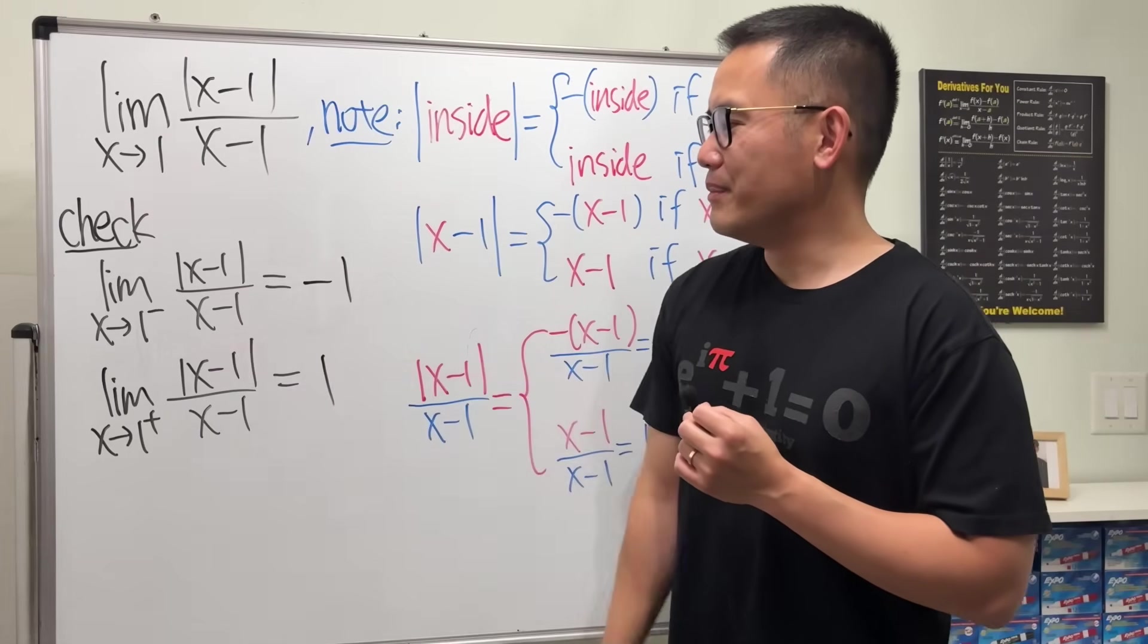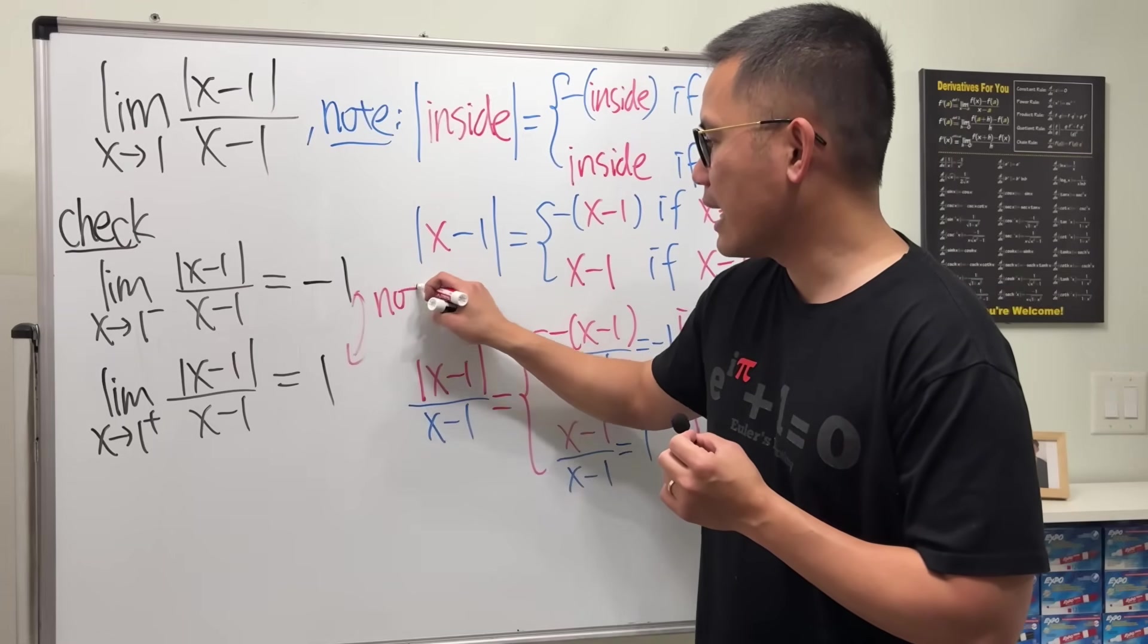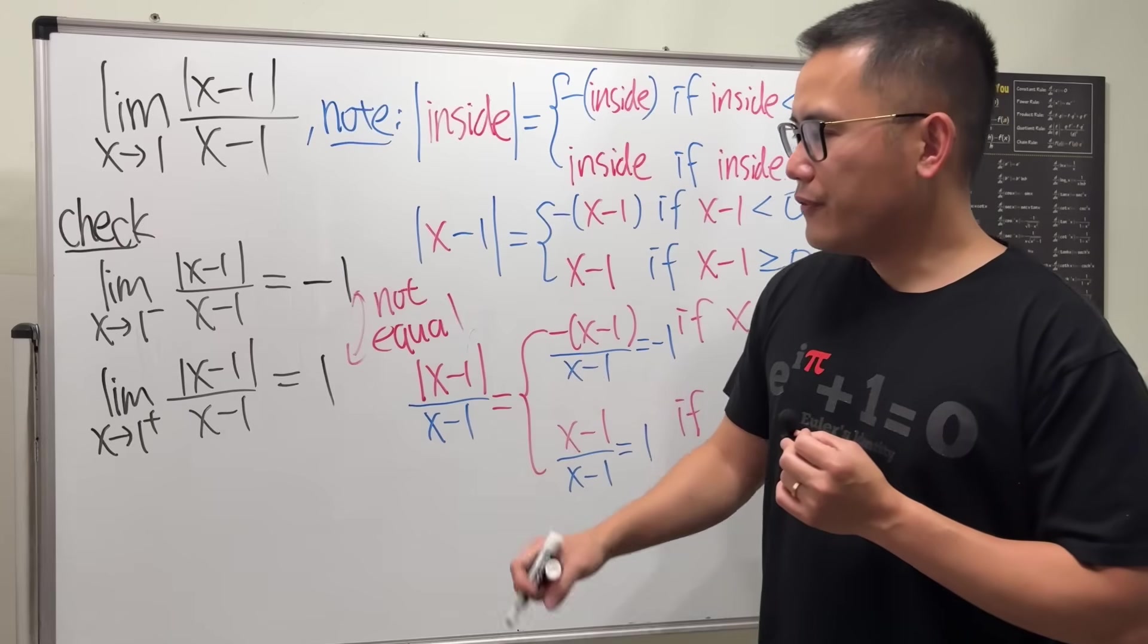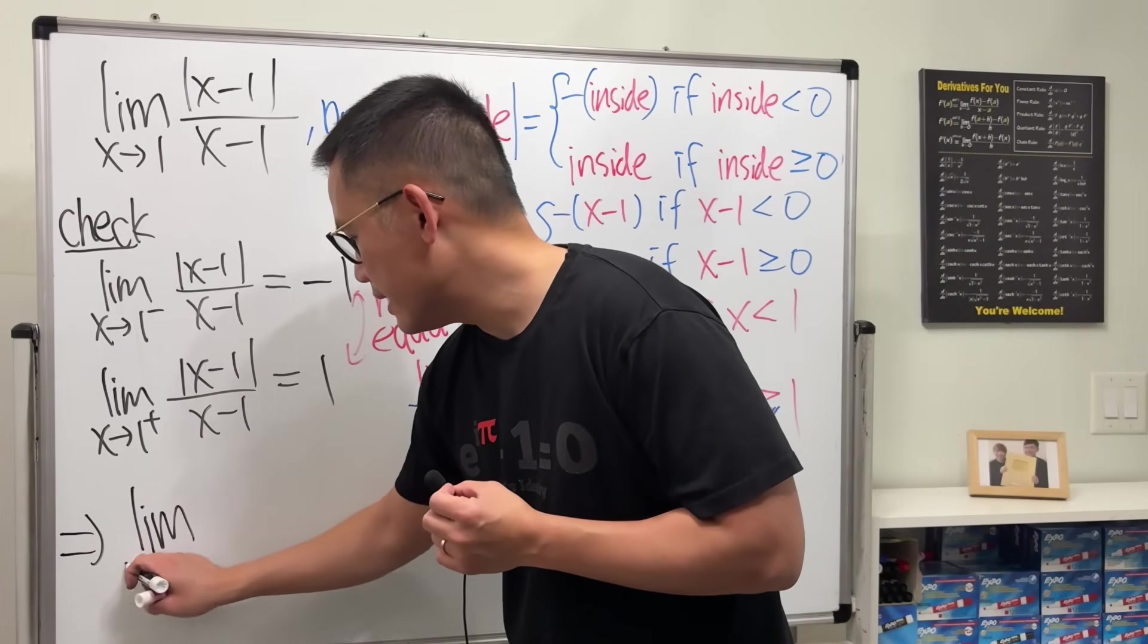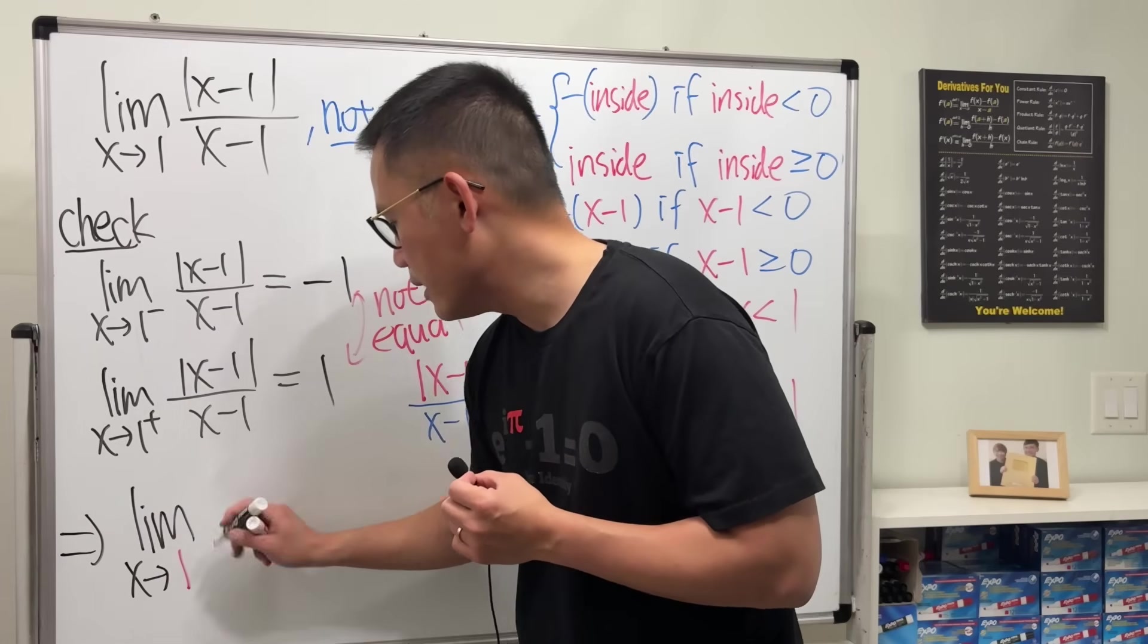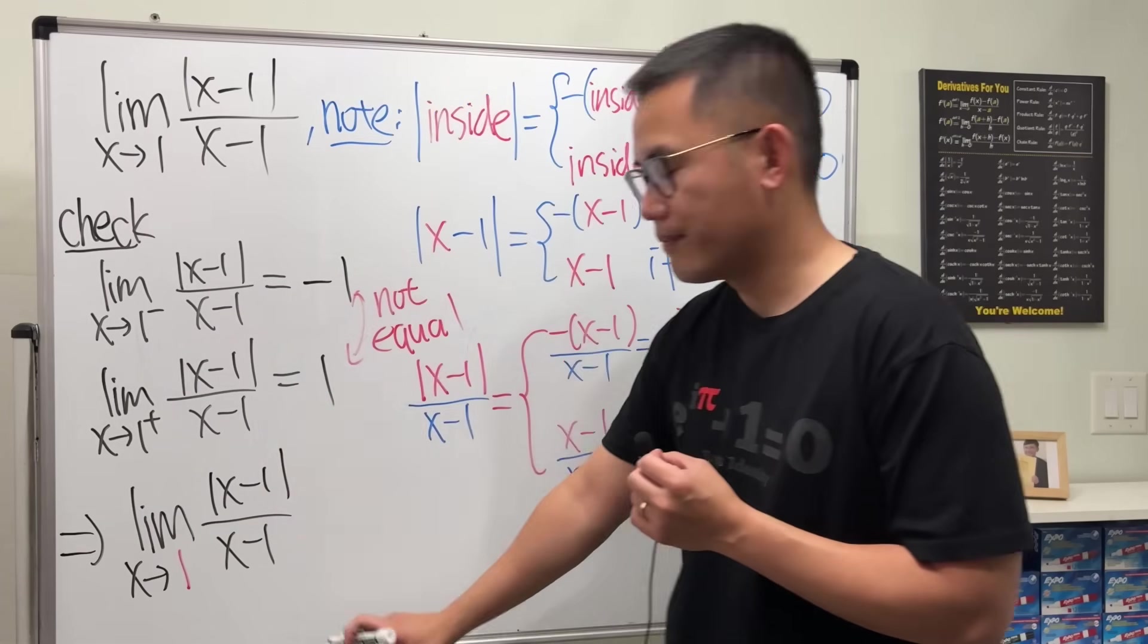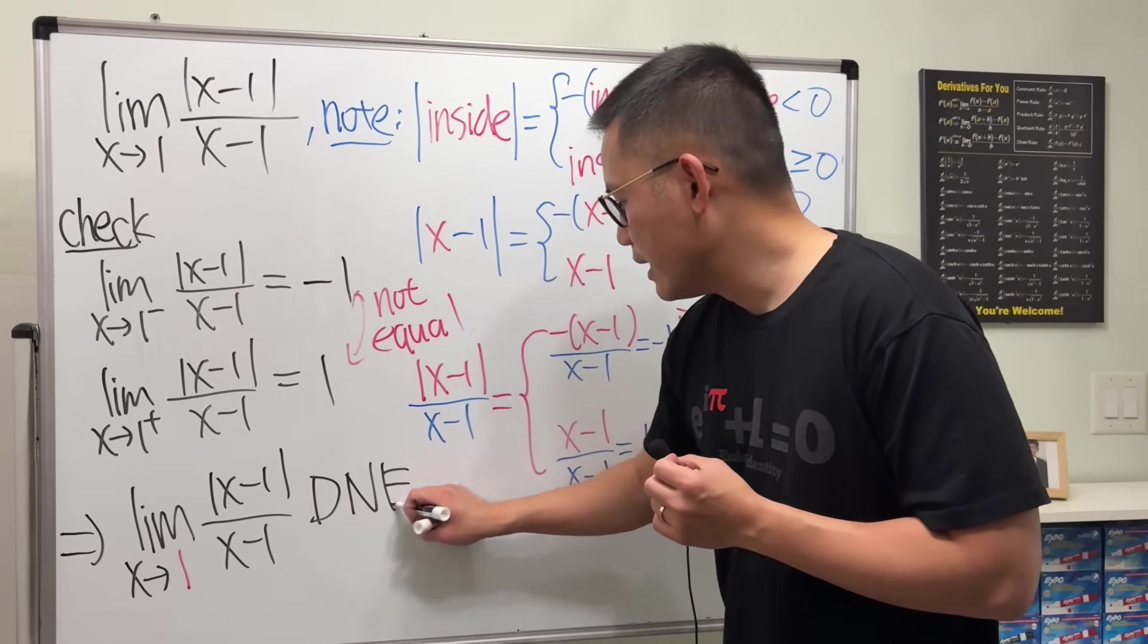So we have the left limit and also the right limit. But unfortunately, these are not equal. Therefore, we are going to conclude that the limit as x approaching 1 of absolute value of x minus 1 over x minus 1, this limit does not exist.